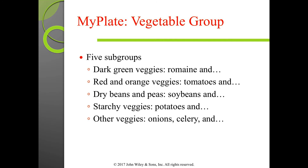When covering the vegetable group in MyPlate, any vegetable or 100% vegetable juice counts — raw or cooked, fresh, frozen, canned, dried or dehydrated, whole, cut up, or mashed. Vegetables fall into five subgroups based on their nutrient content: dark green vegetables (such as romaine, spinach, kale), red and orange vegetables (like tomatoes and butternut squash), dried beans and peas (like soybeans and black-eyed peas), starchy vegetables (like potatoes), and other vegetables.